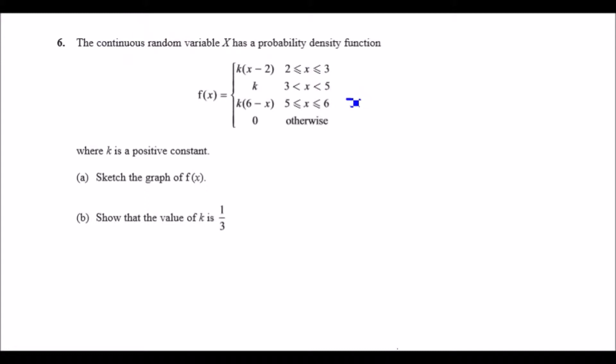Sometimes the k can be kind of annoying, so what I personally do is rewrite all of this as f(x) equals k times everything else: x minus 2, then 1, and 6 minus x. They all have the same ranges.